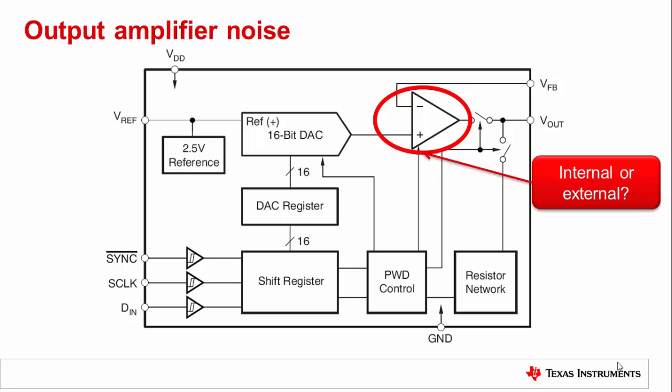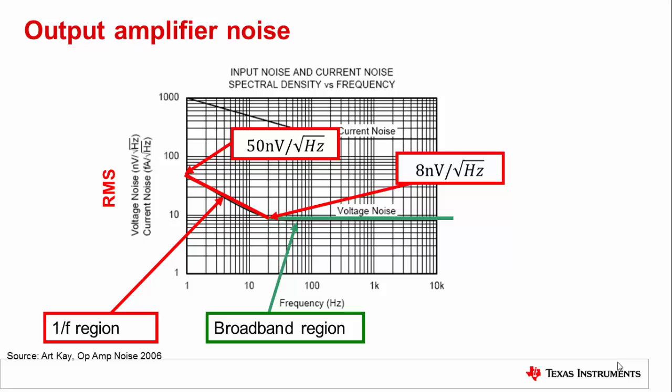Our second source of noise is the DAC's output amplifier. This output amplifier may be included internally in the DAC, or you may have the option to choose your own external amplifier to meet your system needs. Examining op-amp noise has four basic components: 1/f voltage noise, broadband voltage noise, resistor voltage noise, and current noise. Current noise and resistor noise have a lot to do with the implementation, and less to do with the properties of the amplifier itself. For our purposes, we'll only consider the 1/f and broadband noise components, since these are more intrinsic values to the operational amplifier and will help us select our amplifier intelligently.